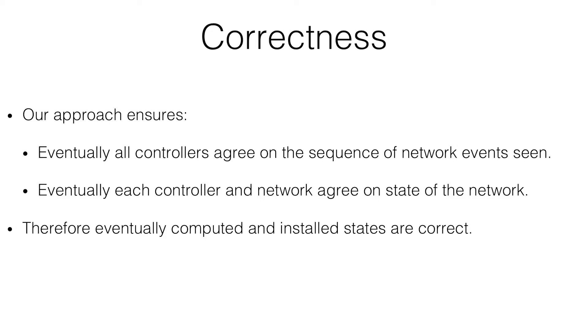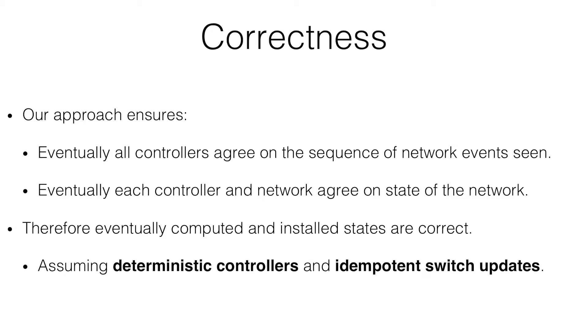You can get correctness, but you have to make a couple of assumptions. The assumptions are just that the controllers themselves are deterministic — given the same sequence of events, they come up with the same output. You also need idempotent switch updates: if I update the switch twice with the same rules, things shouldn't go haywire. The claim is that you can get working SDN controllers and networks without any consistency.